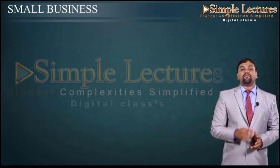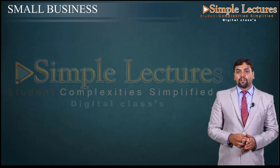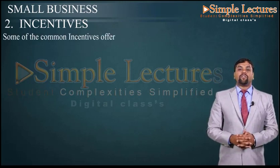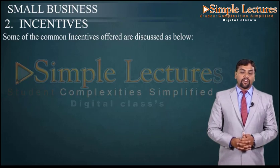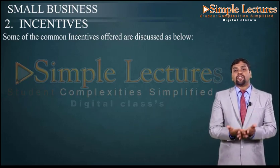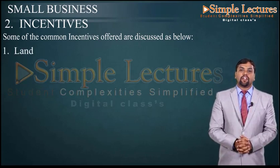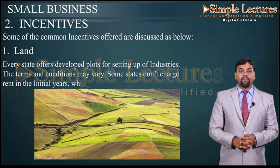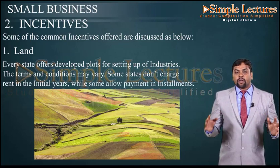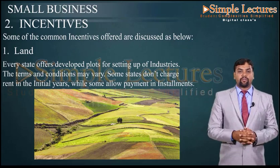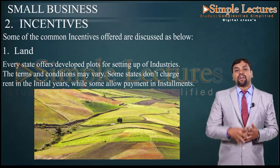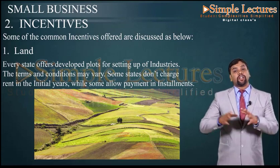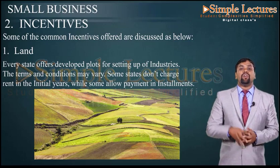Another government scheme for the upliftment of small industries is the incentive scheme. One of the first and most basic incentives relates to land. Every state government offers developed plots of area for setting up industries. Terms and conditions vary — some states don't charge rent in the initial years, while others allow payment in installments for the provided land.